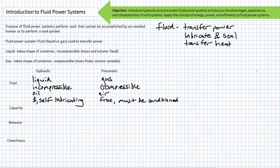Both fluid mediums, in addition to transferring power, serve to lubricate and seal clearances between dynamically moving surfaces and transfer heat due to inefficiencies. Note that excessive heat can progressively damage and change the chemical nature of oil such that the oil itself can be considered a contaminant to the system. The fluid in a fluid power system is an essential component; later lectures will discuss fluid properties and conditioning needs.